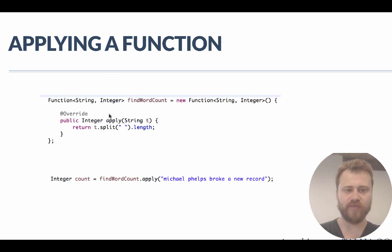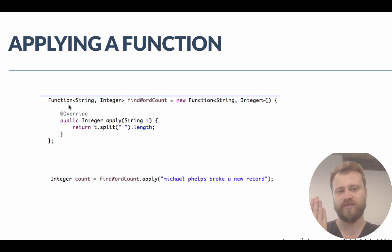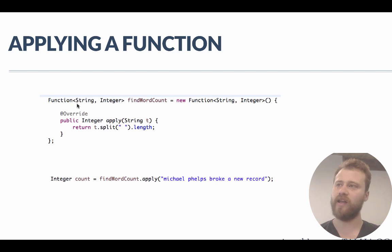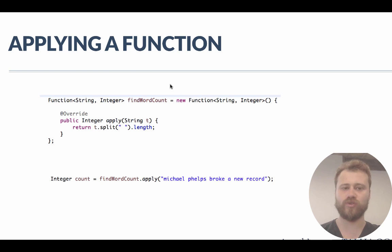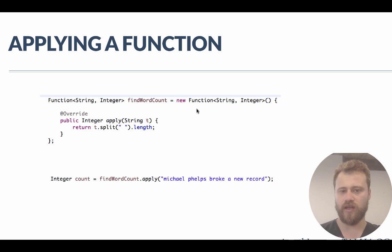Let me show you the types. Since we need to take a text as input, the input type is String. Since we want to return a word count, the output type is Integer. So the syntax is: we define a reference to a function that takes a String and returns an Integer.